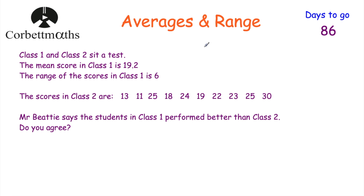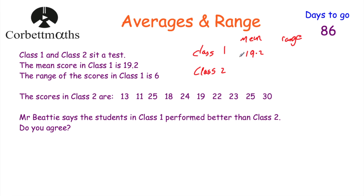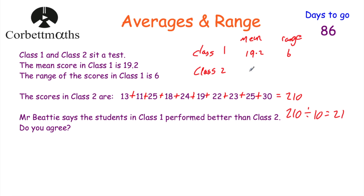I'm going to make a little table with class one and class two, and write mean and range. In class one the mean is 19.2 and the range is 6. Now let's work out the mean and range for class two. Adding up all the values in class two gives 210. There are 10 values, so 210 divided by 10 equals 21. The mean score in class two is 21. For the range: the largest value is 30 and the smallest is 11, so 30 take away 11 equals 19. The range in class two is 19.